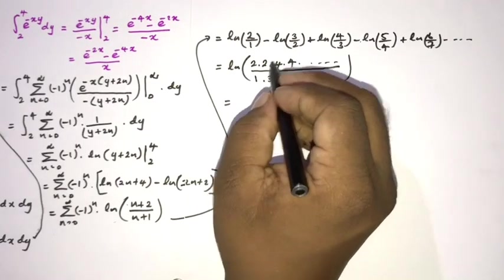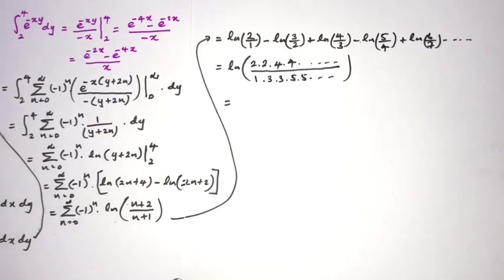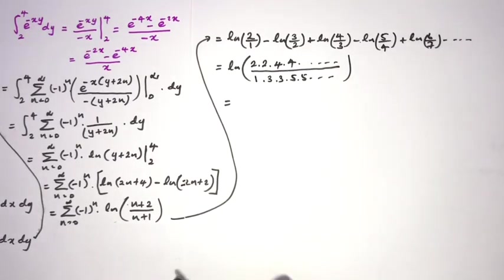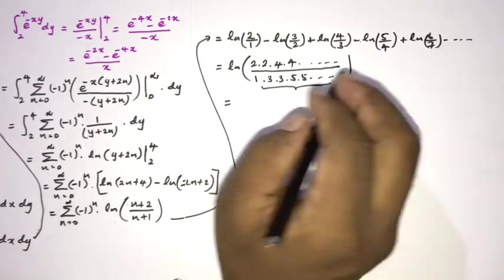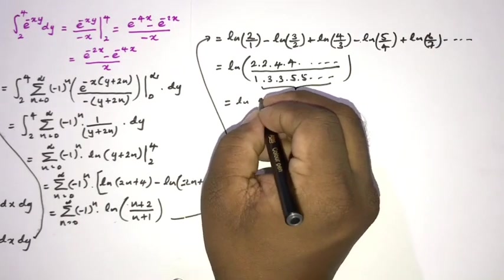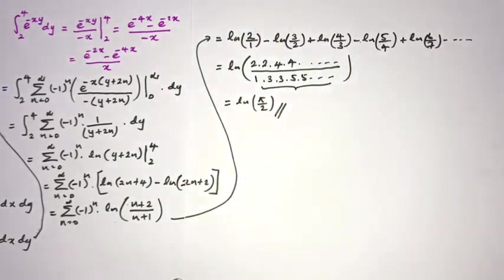Here we recognize Wallis's product. I proved Wallis's product using the eta function in another video — I will add the link in the description and make a card. We know Wallis's product equals pi over 2. So this is the answer for this integral. If you like this type of video, please subscribe to the channel. Thank you for watching.